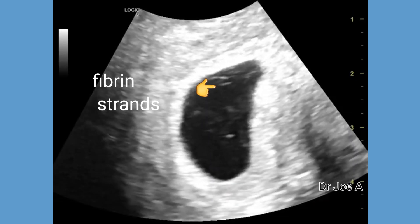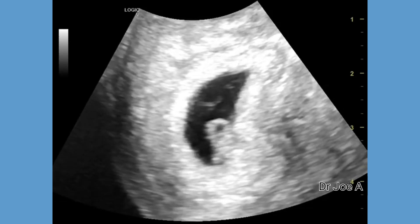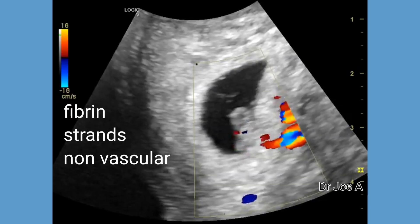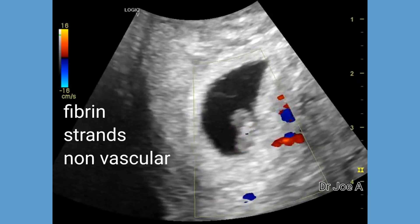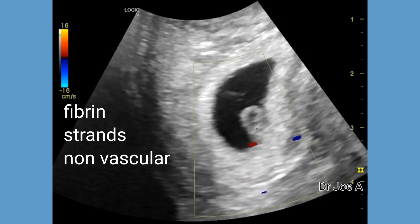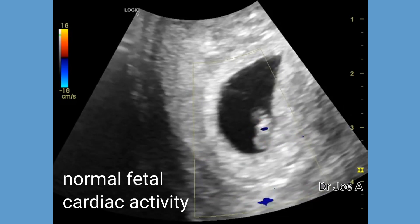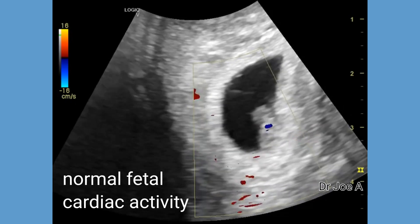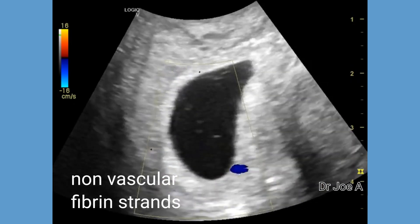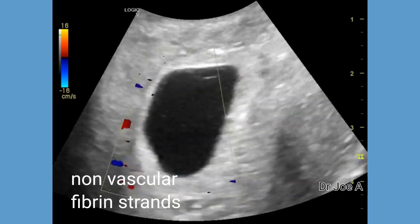What are the important differentiating features of fibrin strands from amniotic bands? First of all, fibrin strands are thin and wispy while amniotic bands are thicker and more fibrous. Fibrin strands are also usually mobile within the gestational sac while amniotic bands are fixed and do not move. On color Doppler, fibrin strands show no vascularity. Also, fibrin strands are usually seen in early pregnancy while amniotic bands are more commonly seen in the second or third trimester.